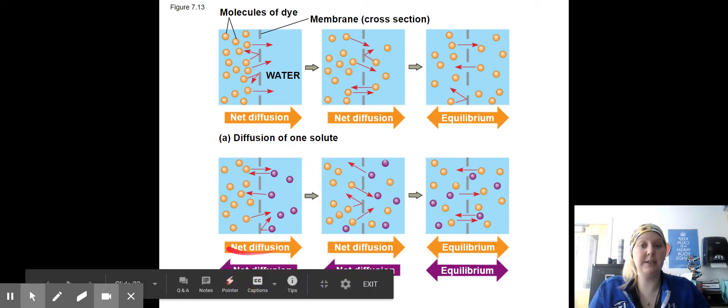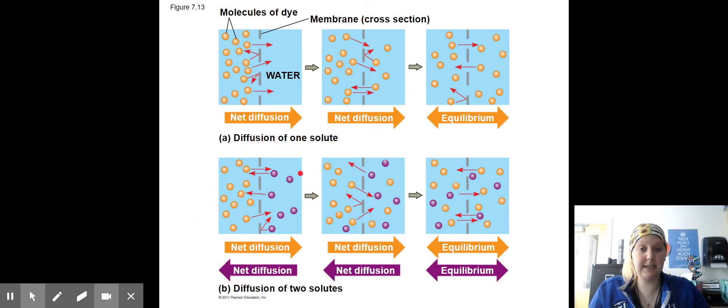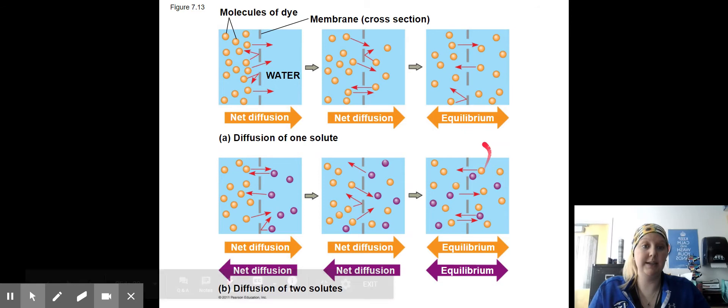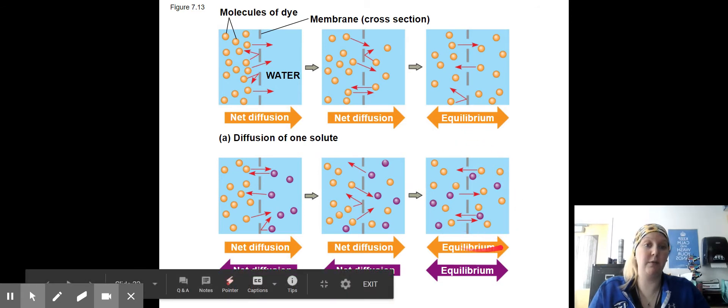Visually with two different dyes, the same thing is happening. Our purple dyes are going to move one way and our orange dyes are going to move the other, until there is the same amount of both dyes on both sides of the membrane.